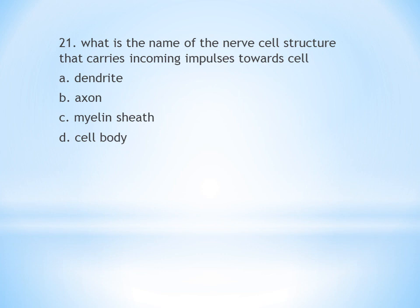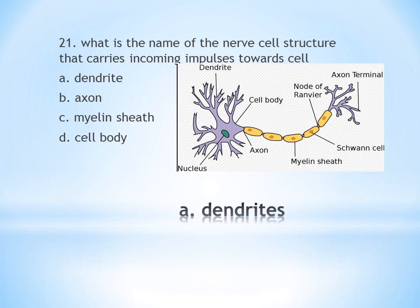Twenty-first question: What is the name of the nerve cell structure that carries incoming impulses towards the cell body? A. Dendrite, B. Axon, C. Myelin sheath, D. Cell body. Answer is A — dendrite carries impulses towards the cell.